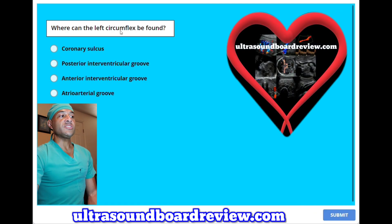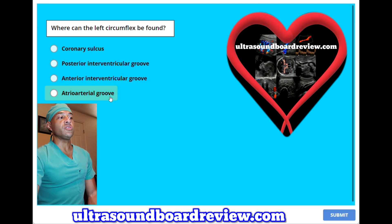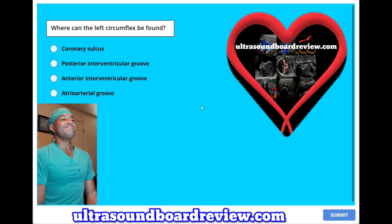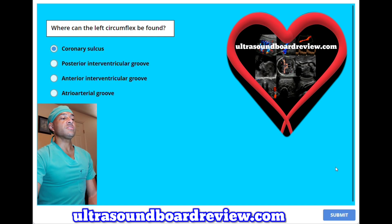Where can the left circumflex be found? A. Coronary sulcus. B. Posterior interventricular groove. C. Anterior interventricular groove. Or D. Atrio-arterial groove. The answer is A — coronary sulcus.